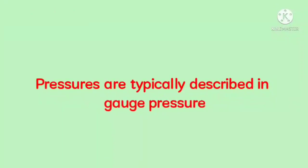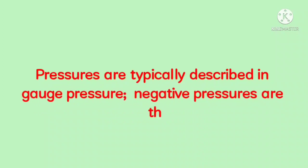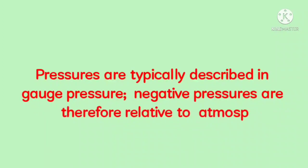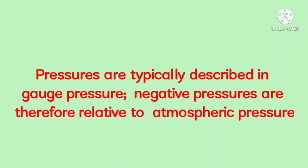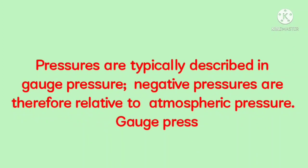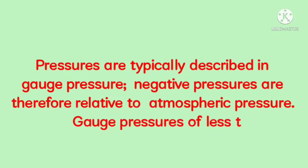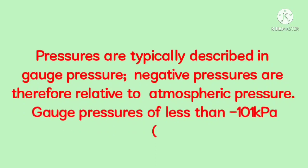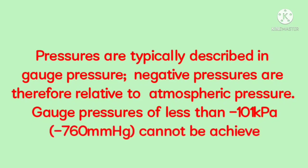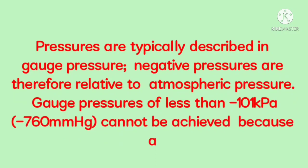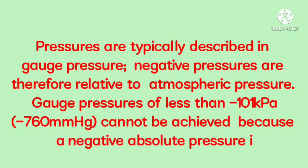Pressures are typically described in gauge pressure; negative pressures are therefore relative to atmospheric pressure. Gauge pressures of less than 101 kPa, or 760 mmHg, cannot be achieved because a negative absolute pressure is impossible.